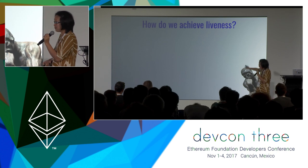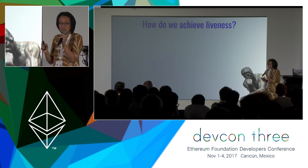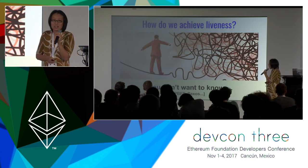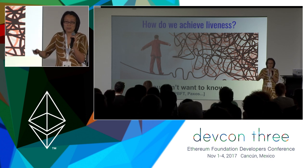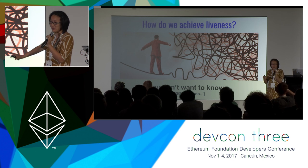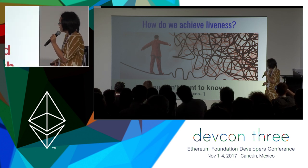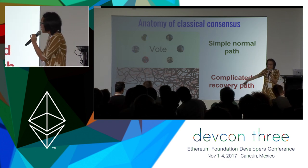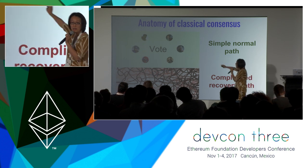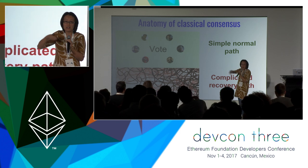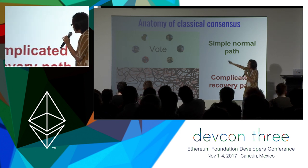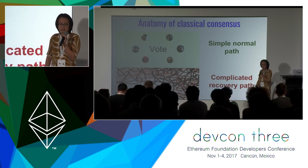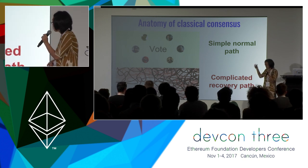The crux of consensus is to solve the liveness problem when the leader is corrupt. Classical protocols like PBFT and Paxos rely on a very complicated leader re-election mechanism — in PBFT this is called view change. The anatomy of classical protocols is: a very simple voting path for the normal case, but when the leader is corrupt they go to this very complicated recovery path, and that's where things become extremely complicated.